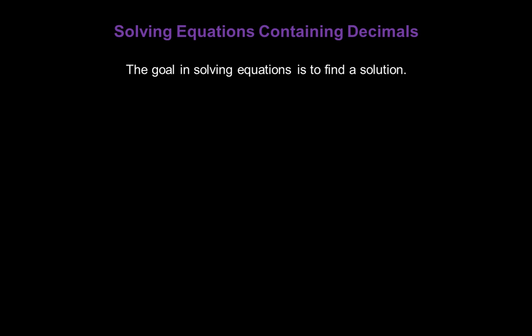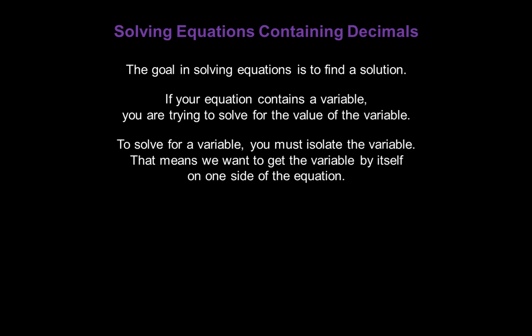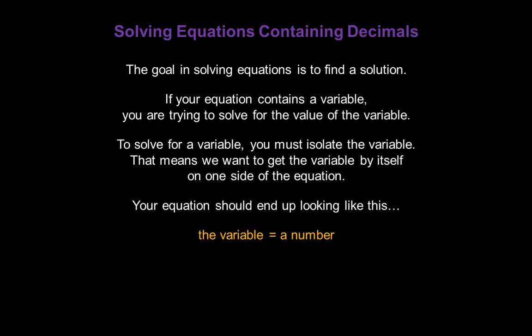The goal in solving equations is to find a solution. If your equation contains a variable — a letter — you're trying to solve for the value of that variable. To solve for a variable, you must isolate it, meaning we want to get the variable all by itself on one side of the equation. Your equation should end up looking like this: the variable equals a number. For example, p equals 16.